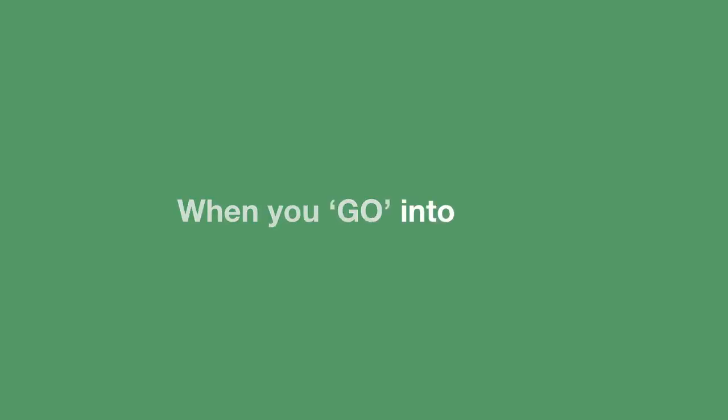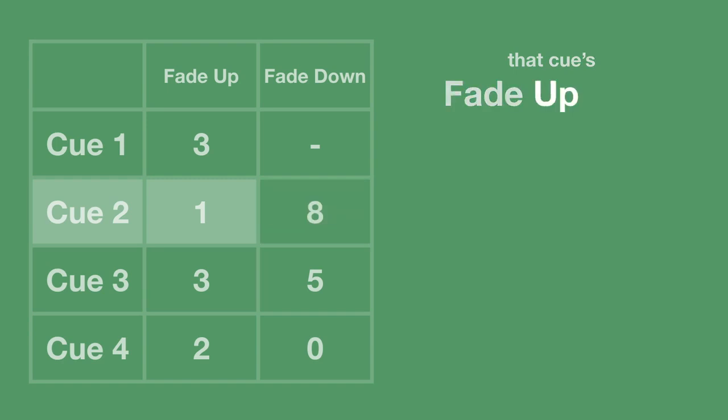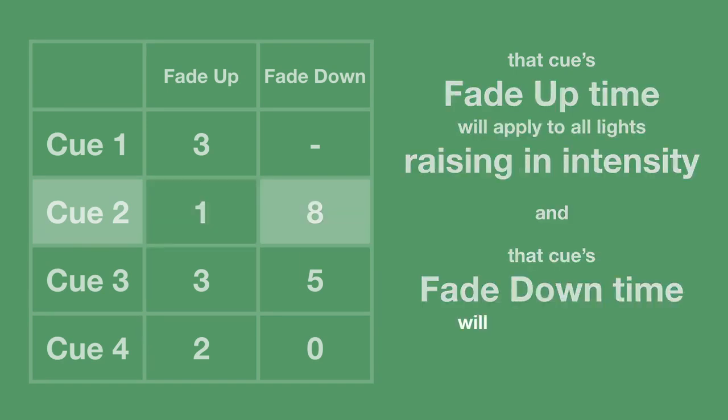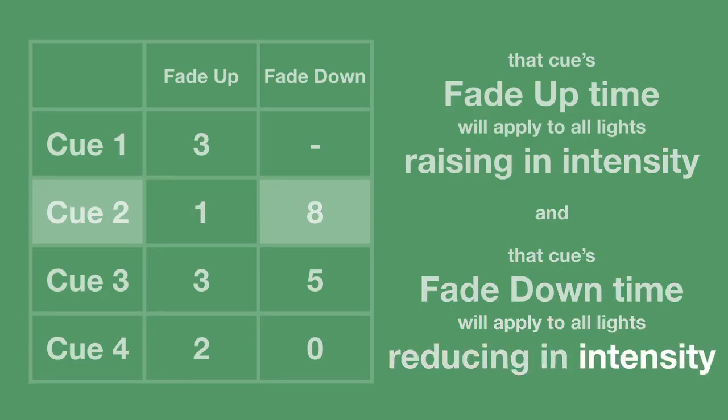It's possible to split the fade time into intensity fade up and fade down. When you go into a cue, that cue's fade up time will apply to all lights raising in intensity, and the cue's fade down time will apply to all lights reducing in intensity.